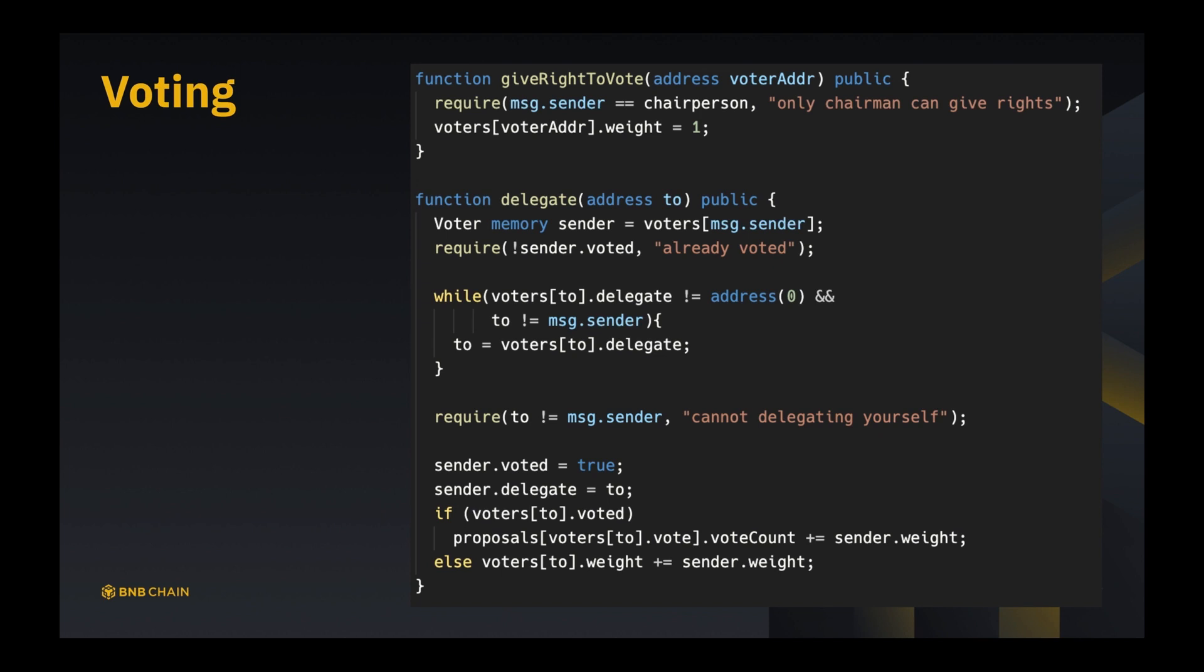This again creates the voter instance if it has not been created and sets the weight to one. Note that there might be some problems with this implementation. Say for example voterAddress has already been picked as delegate by nine people, so now the weight is ten, and you give right to it - suddenly the weight becomes one. This is not very ideal. So if you want to make it safer, we need to run a check here and require say voters[voterAddress].weight is zero or other checks. But we can assume that the chairperson will not mess things up and just proceed.